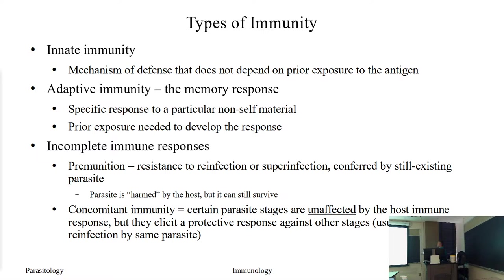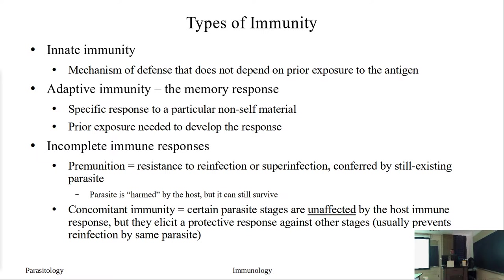So this is where we left off — we're doing our background of the immune system, basically an immunology lecture cut down into one and a half lectures. We talked about immunity versus resistance, infective versus non-infective, all of that. What we're interested in is the actual immune response. We have a couple types of immunity. The first is the innate immune response — innate immunity — which involves mechanisms that don't depend on any prior exposure.